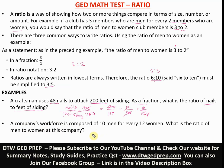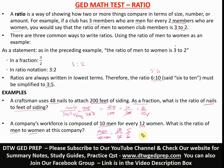Example two: A company's workforce is composed of 10 men for every 12 women. What is the ratio of men to women? We have 10 over 12. Dividing by 2 gives us 5 over 6, and we can't reduce this any further. So the answer is five to six, which can also be written as 5:6.